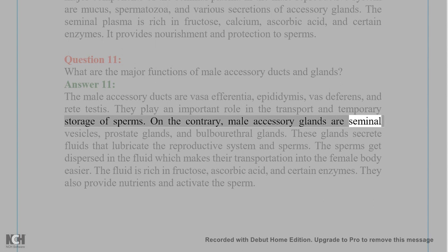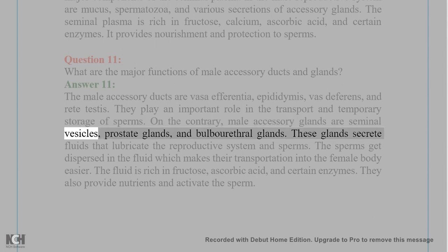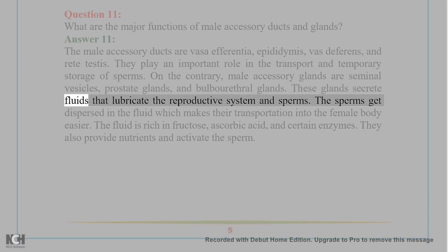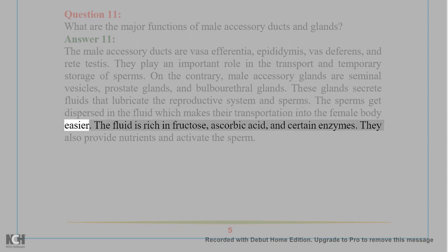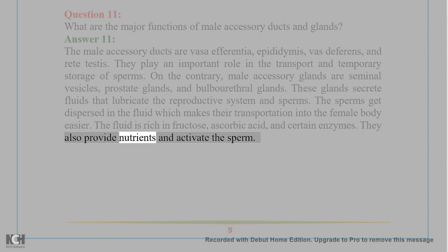Male accessory glands are seminal vesicles, prostate glands, and bulbourethral glands. These glands secrete fluids that lubricate the reproductive system and sperms. The sperms get dispersed in the fluid, which makes their transportation into the female body easier. The fluid is rich in fructose, ascorbic acid, and certain enzymes, which provide nutrients and activate the sperm.